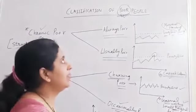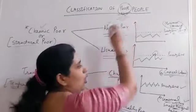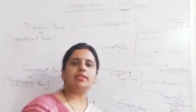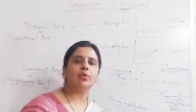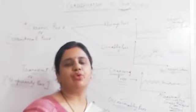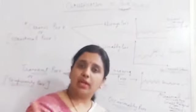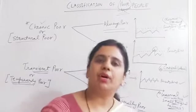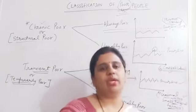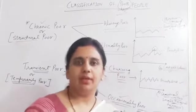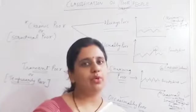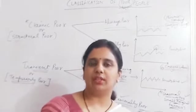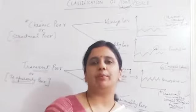First of all, understand who all are called poor. Poor is a person who is unable to get his minimum requirements of life. The minimum requirements are food, clothing, and shelter — that person is unable to earn these basic necessities.